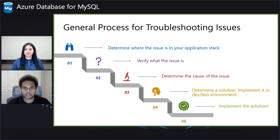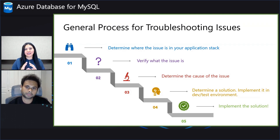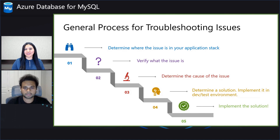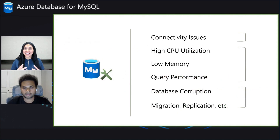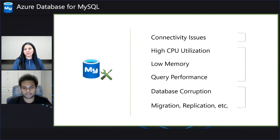Finally, implement the solution in your production environment so that your application is up and running. All of these steps look really simple, but more often than not we get into panic mode and directly jump to solutioning with baseless assumptions — so thank you for going through these five steps in detail. Folks, this is exactly what we are going to cover in the upcoming episodes. For each topic — connectivity issues, performance issues, and other issues specific to Azure — we will cover in depth how to approach the problem, how to isolate the cause, and how to fix them.